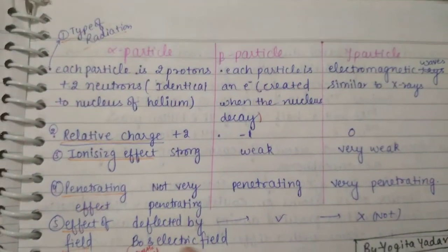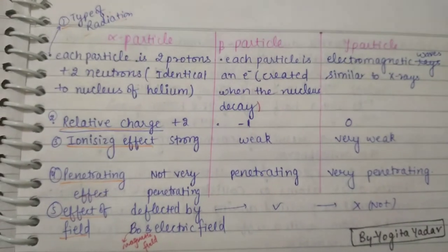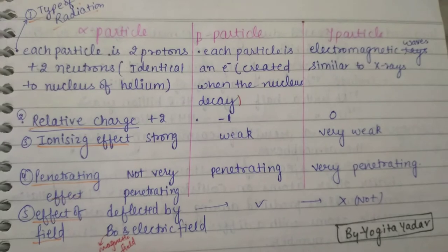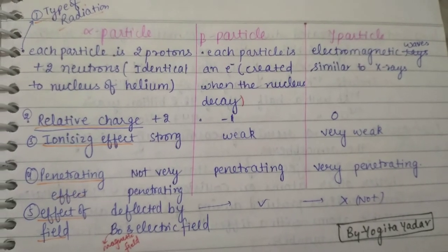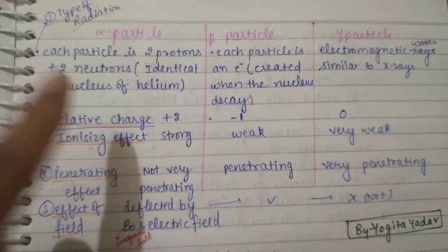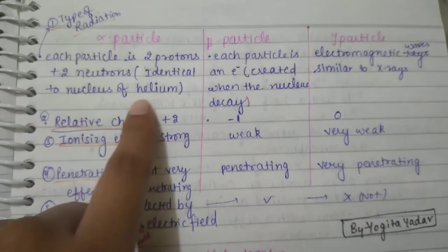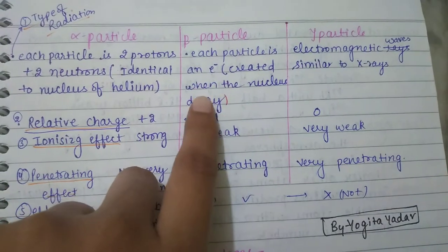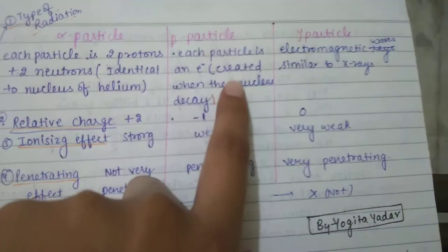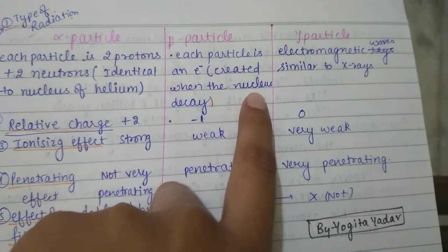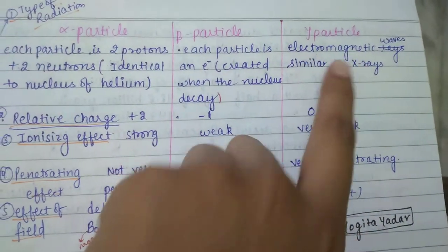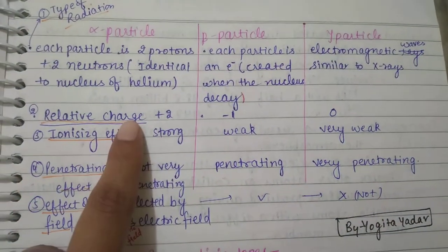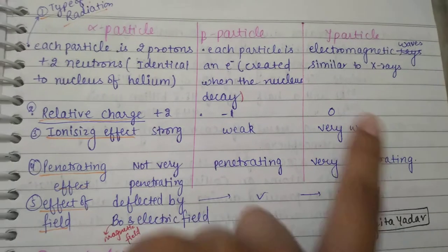Comparing alpha, beta, and gamma particles: alpha particles consist of two protons and are identical to the nucleus of helium. Beta particles — each particle is an electron created when the nucleus decays. Gamma particles are electromagnetic waves similar to X-rays. In terms of relative charge, alpha is +2, beta is −1, and gamma is 0.